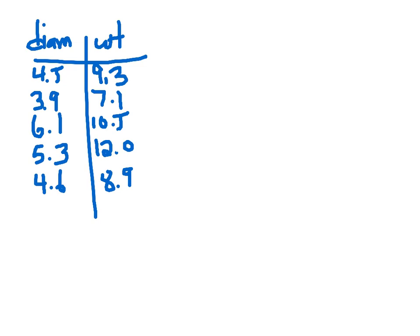For example, this might be a list of bivariate data. What I mean here is that there's a diameter of certain things, like certain melons in inches, so 4.5 inches in diameter, and the weight in ounces. So this melon was 4.5 inches in diameter, weighed 9.3 ounces, and so on. I had five melons here, but you can imagine a lot more.